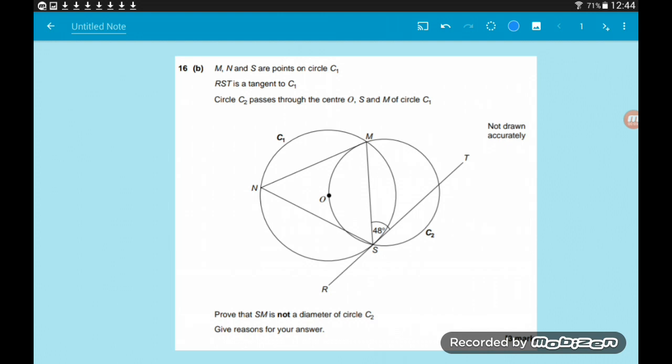Hey guys, so here we've got what I believe to be quite a tricky circle theorem problem. It involves two circles, a tangent, and some other stuff. N, M, and T are points on the circumference of circle C1. RST is a tangent to C1. C2 is a circle that passes through the center of C1 and points S and M.